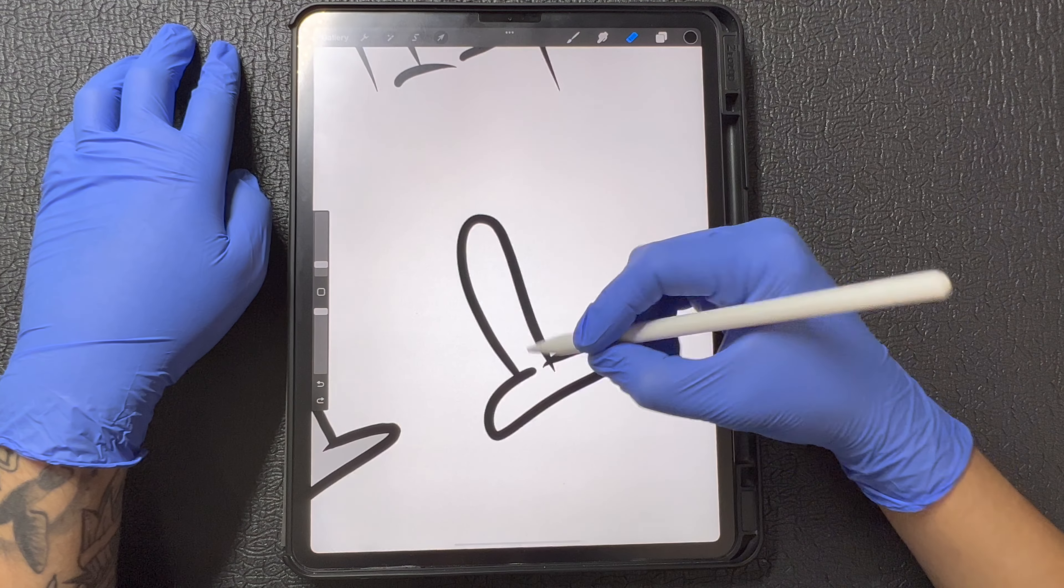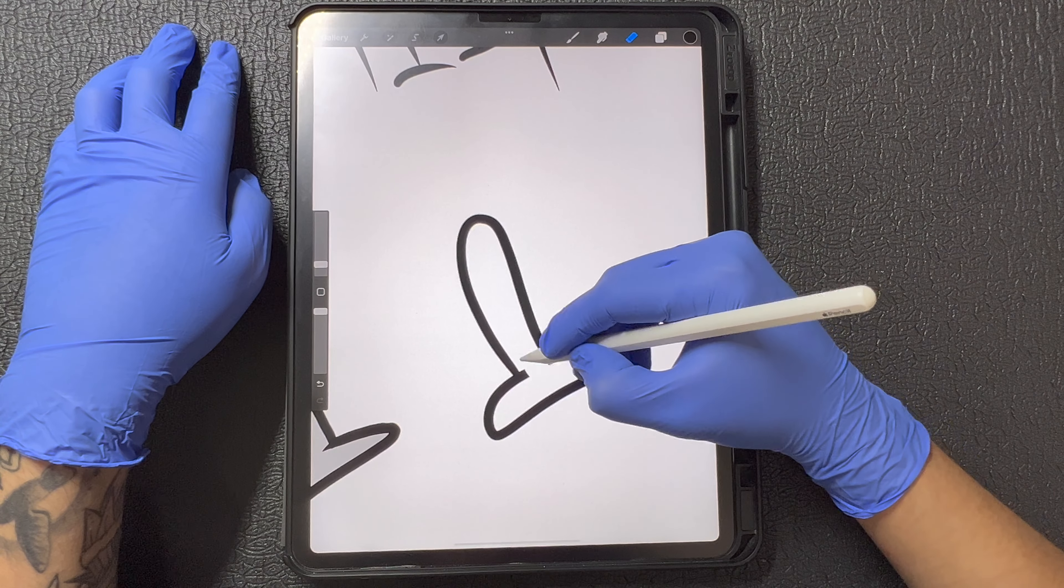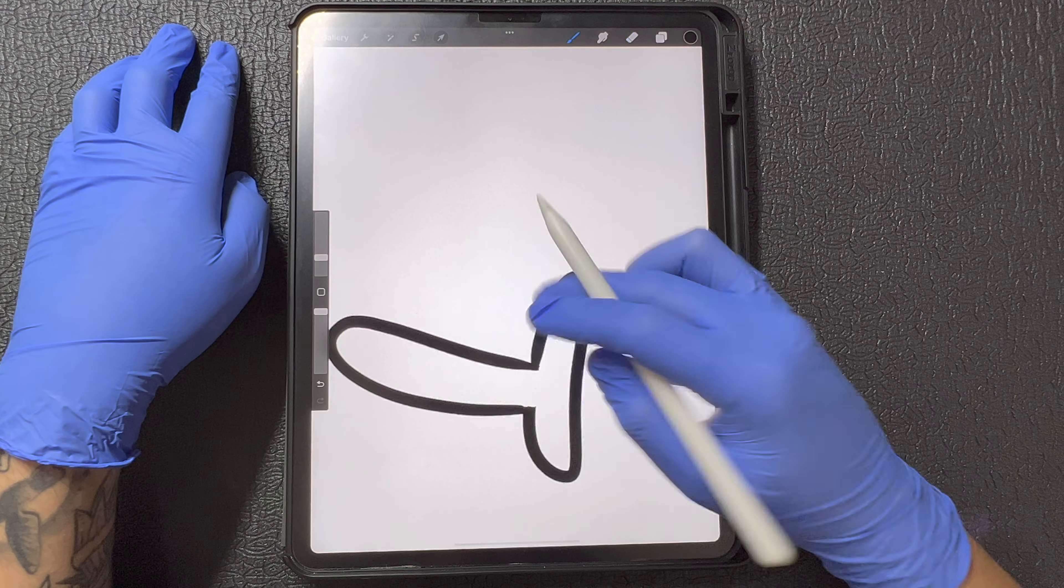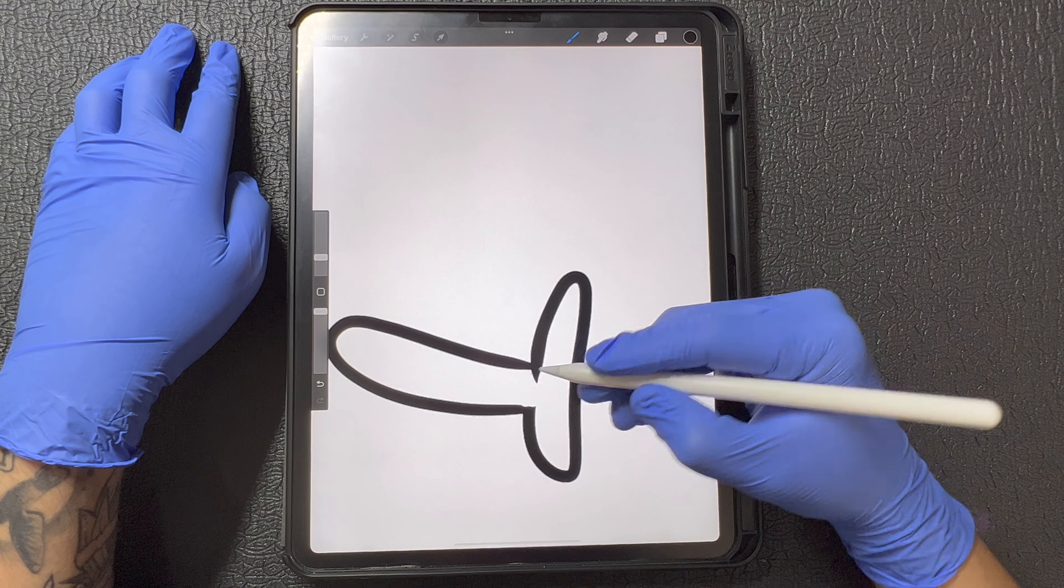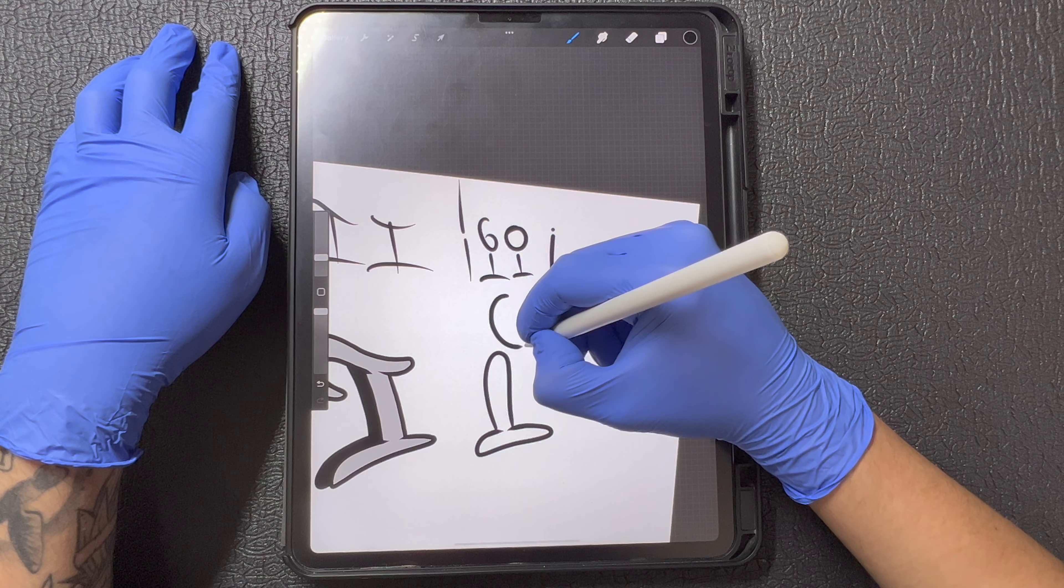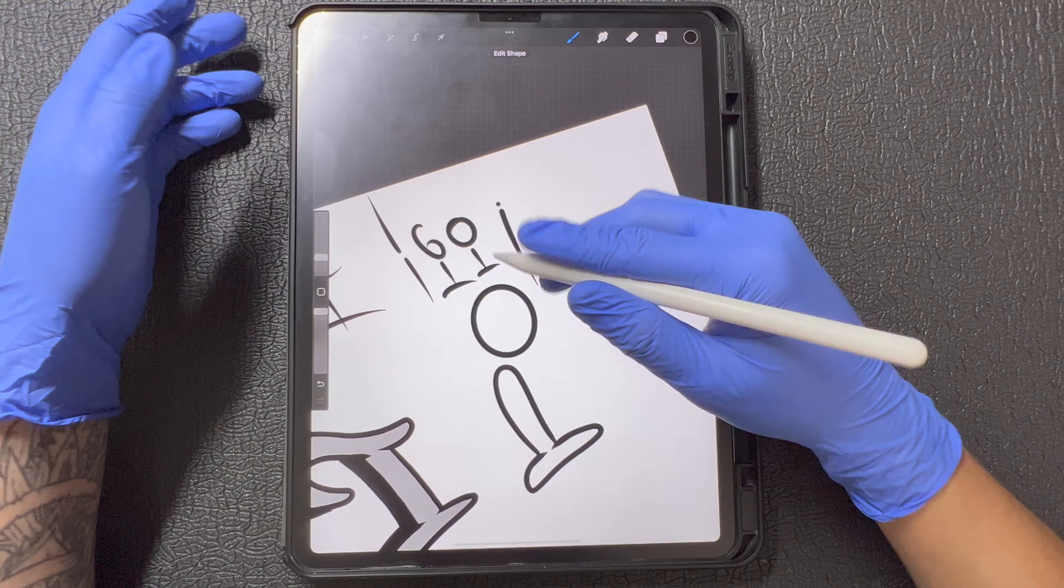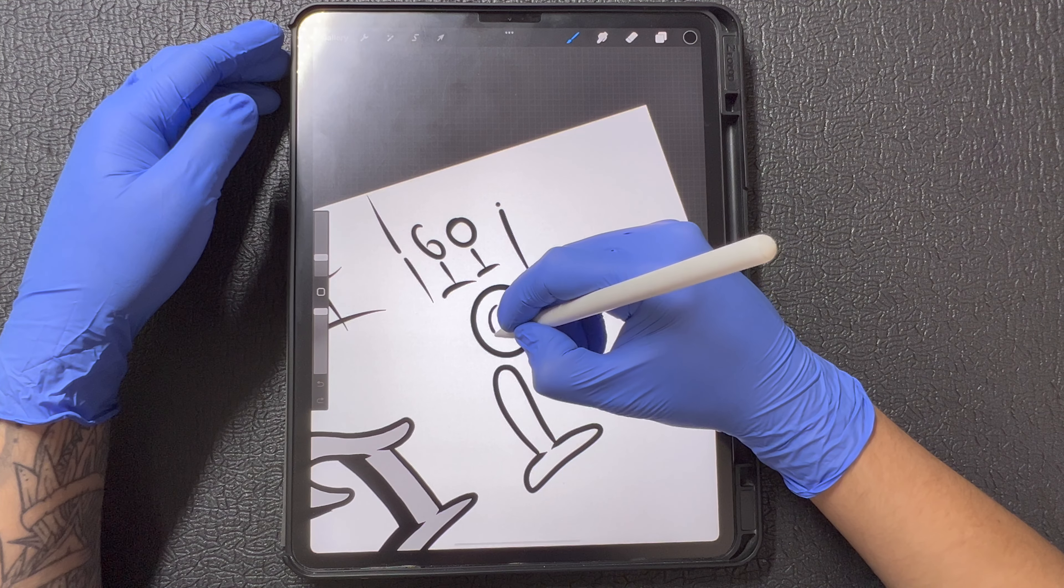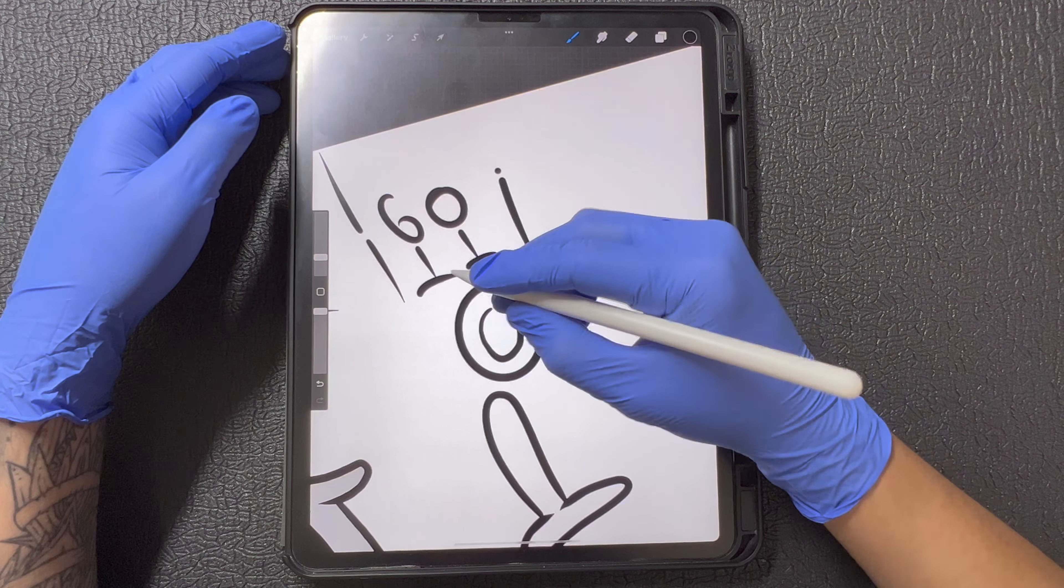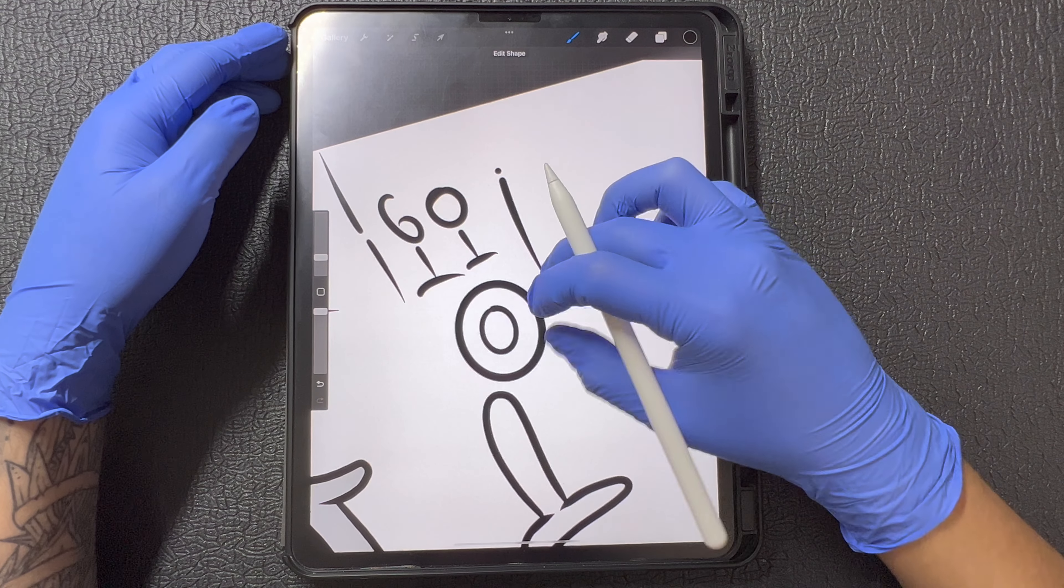And then from here I can remove what I'm not going to be using which would be right here. I'm going to go back and add my little details that I like to add right here. And then from here what I can do is I can add a circle like so should I choose to do so. Or I could go ahead and add another little one on the inside right here which I am going to do like so.